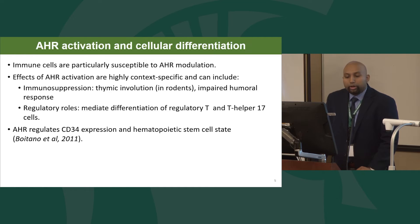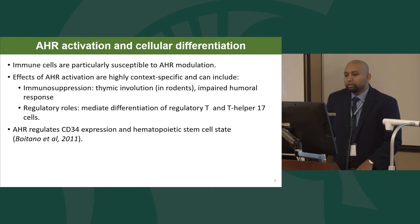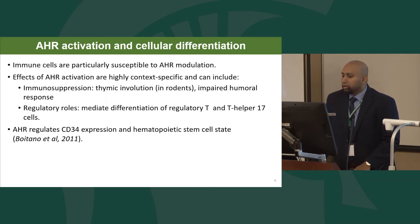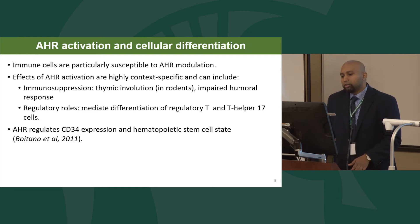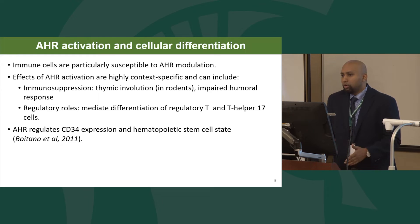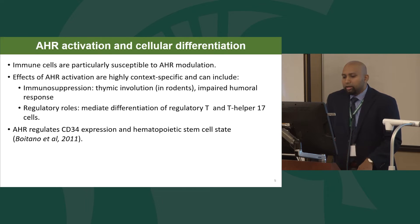When exogenous ligands, which are often immunotoxicants, bind to the AHR, this can cause diverse effects such as immunosuppression, involving thymic involution as seen in rodents with a reduction in the number of thymocytes. It can also affect B cell maturation and lead to impaired humoral responses and antibody-mediated activities. Depending on the ligand, AHR can also mediate T cell differentiation into helper T cells, Th17 cells, or regulatory T cells. But what about the source of immune cells — the CD34-positive hematopoietic stem cells from which all hematopoietic cells arise?